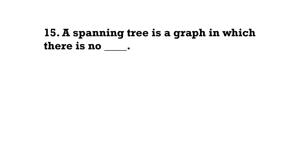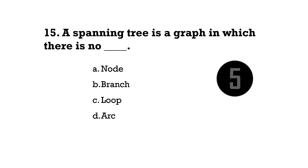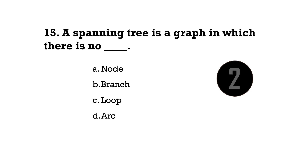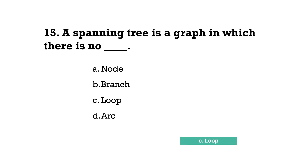A spanning tree is a graph in which there is no what? Option C — there is no loop.